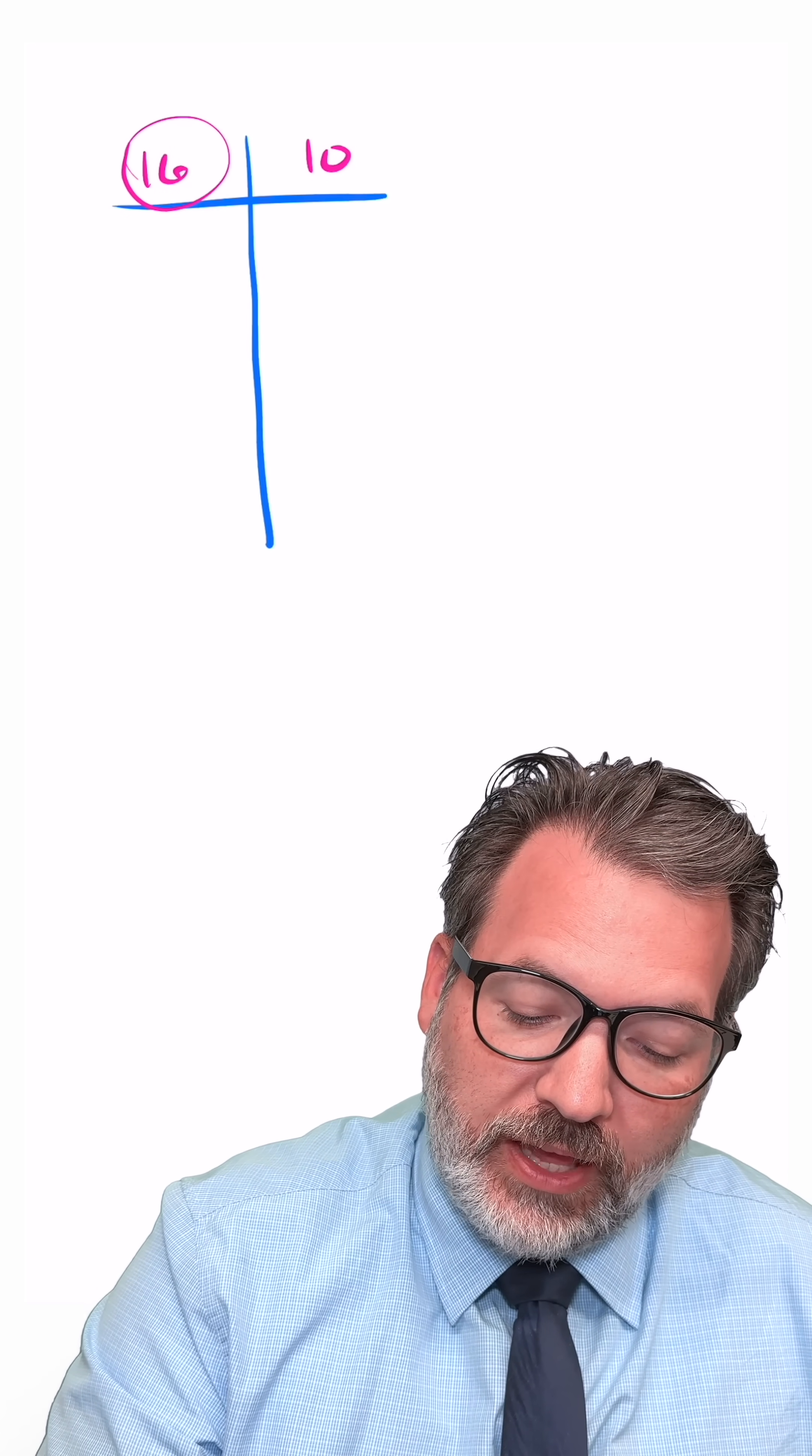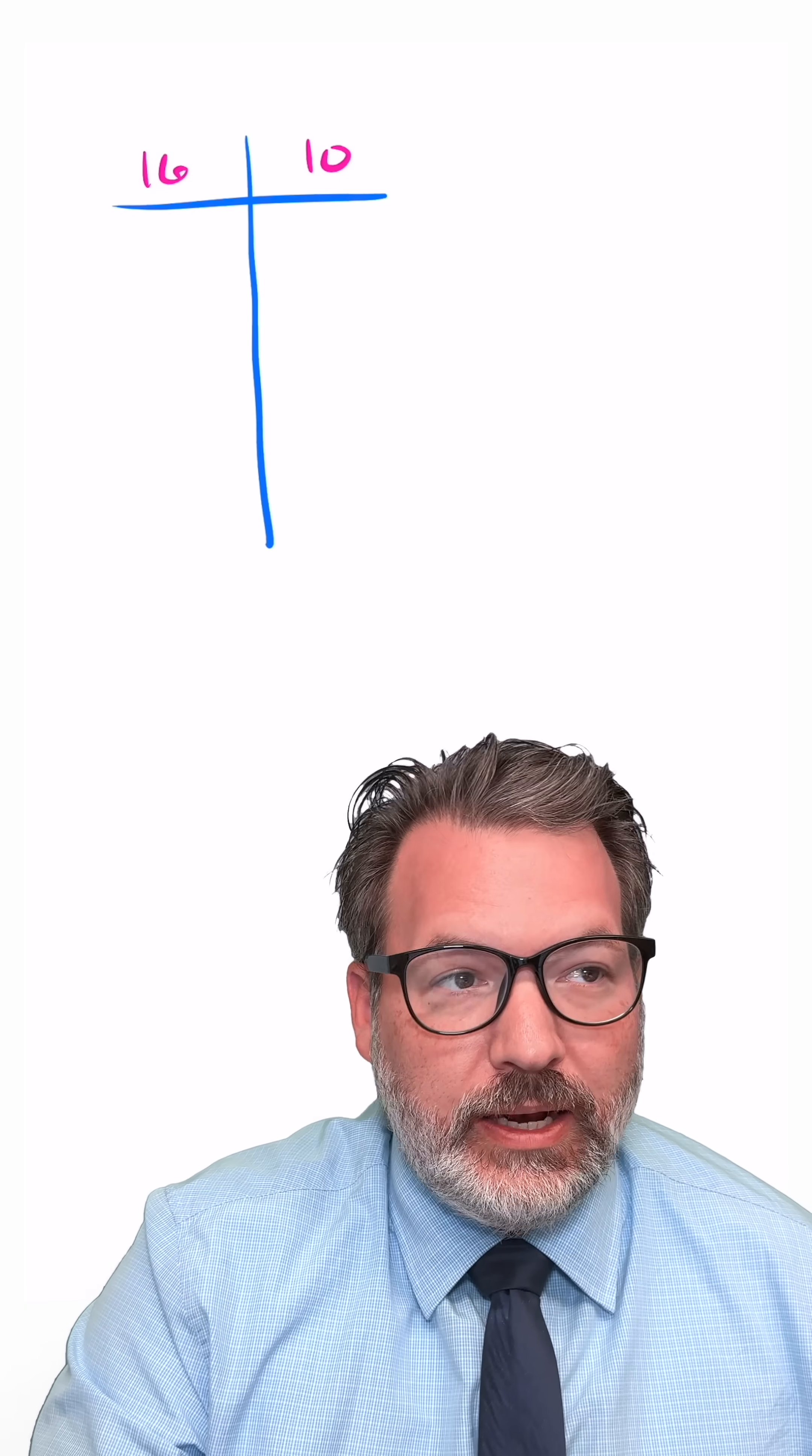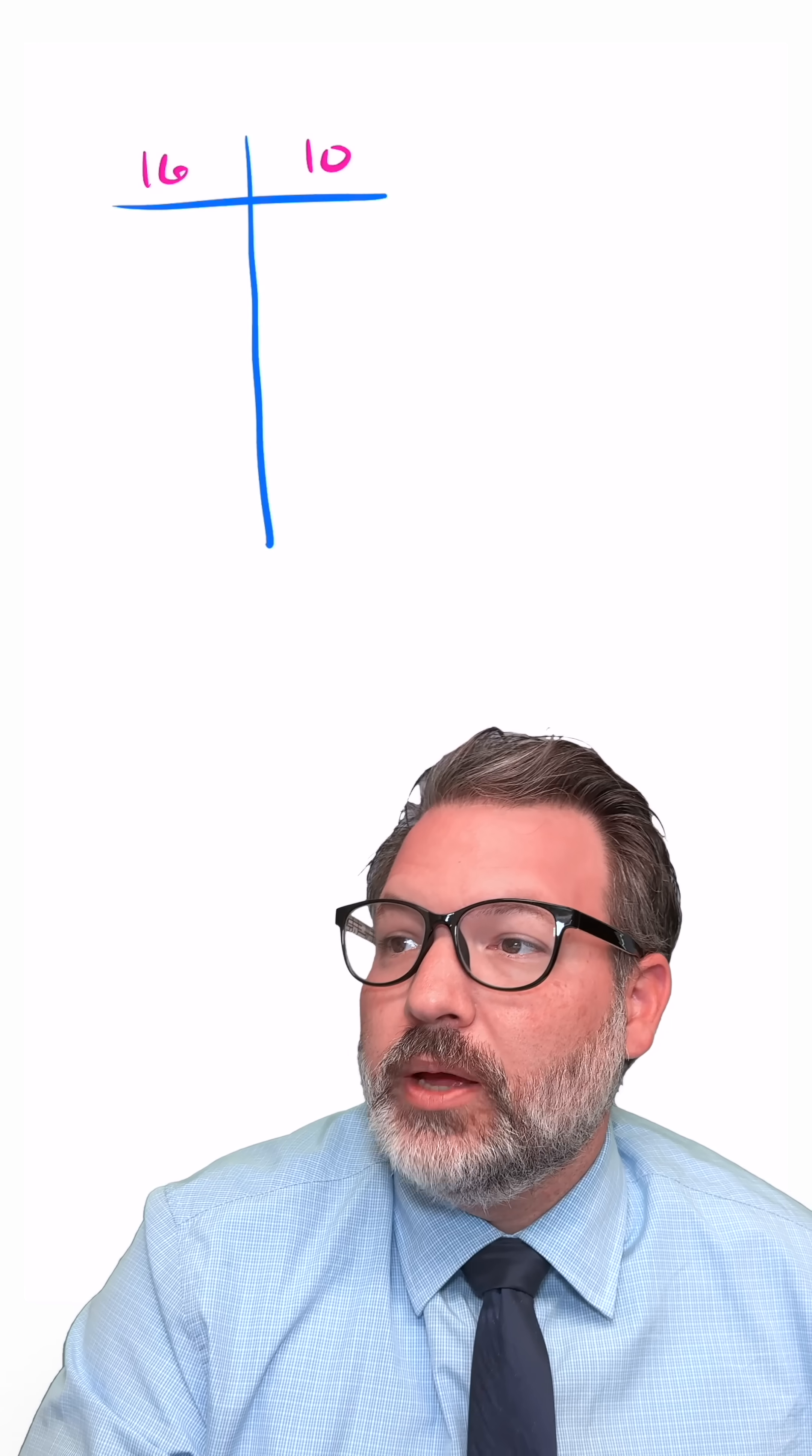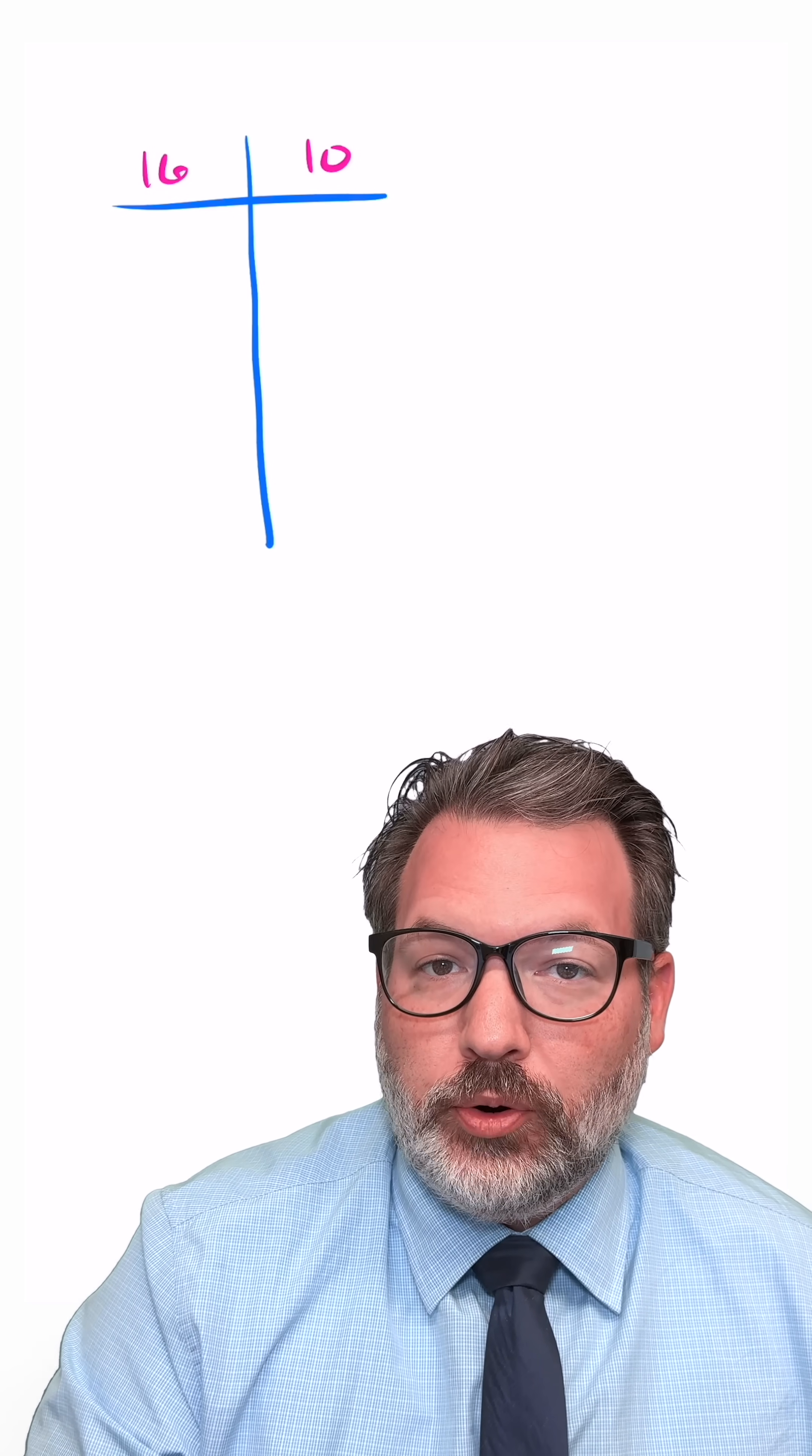What this method says to do is on the left side of this table we are going to divide whatever number is there in half as many times as we can until we get down to one. Of course not all numbers divide nicely by two and so anytime we have a remainder in this process we're just going to ignore it.